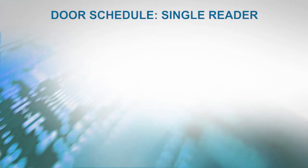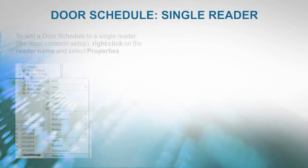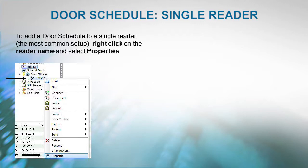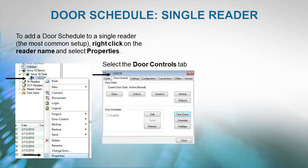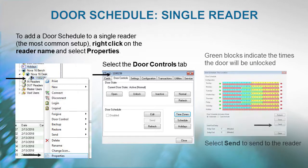To add a door schedule to a single reader — the most common setup — right-click on the reader name and select Properties, then select the Door Controls tab. The green blocks indicate the times the door will be unlocked. Select Send to send the schedule to the reader.